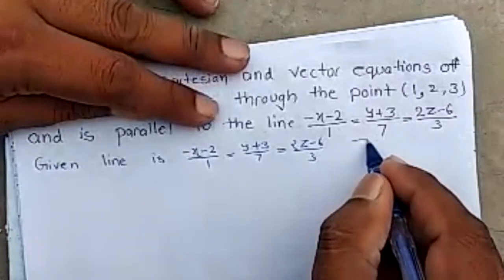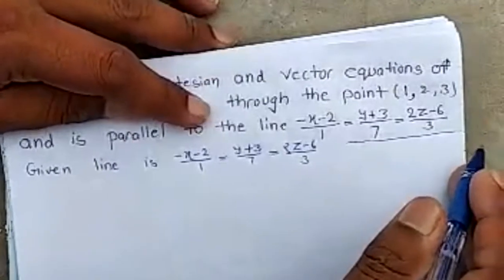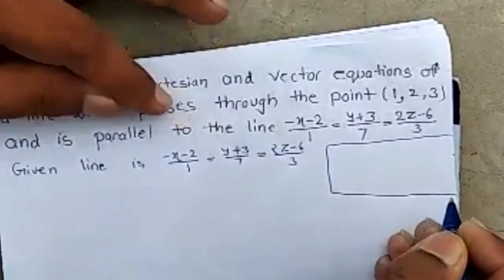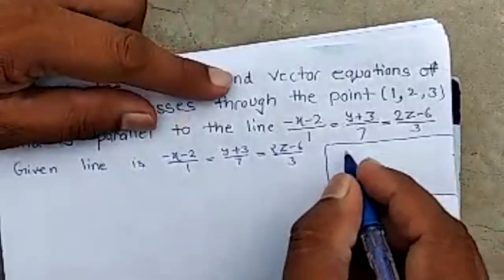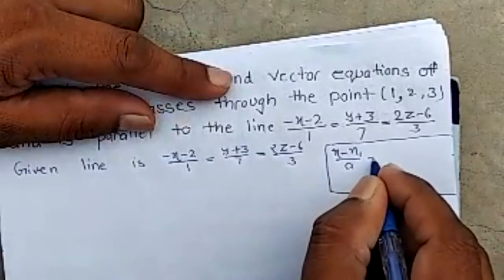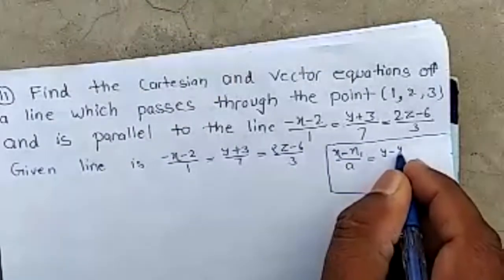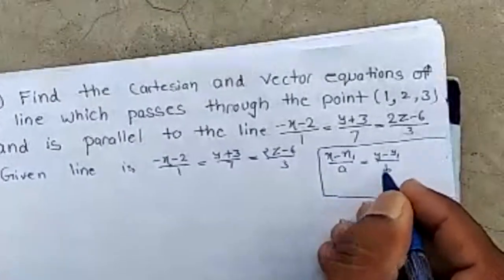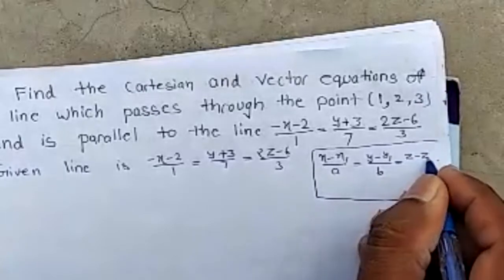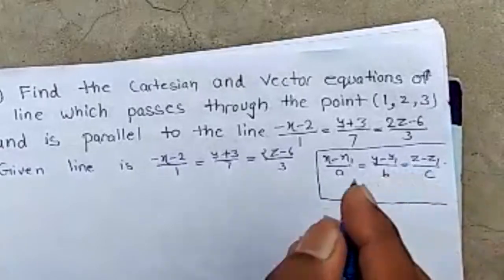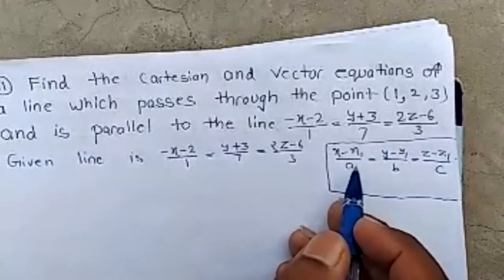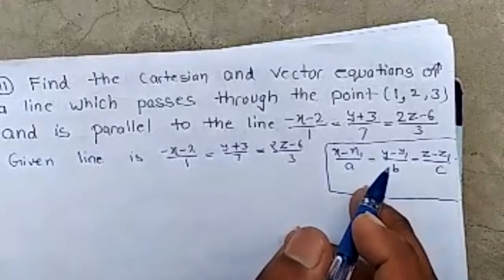We know that the equation of a line passing through point (x1, y1, z1) having direction ratios a, b, c is given by (x − x1)/a = (y − y1)/b = (z − z1)/c. This means it passes through point (x1, y1, z1) and the direction ratios of this line are a, b, c.